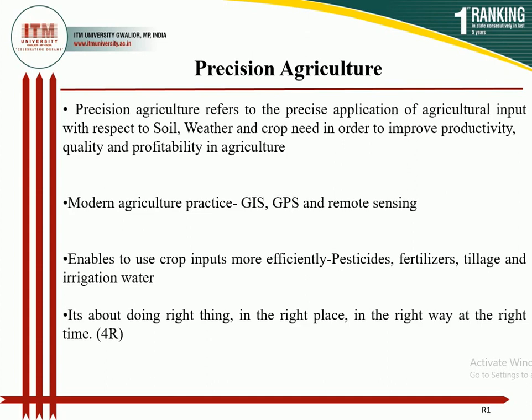Precision farming is an approach where inputs are utilized in precise amounts to get increased average yields compared to traditional cultivation techniques. More than 50% of operational holdings in our country have a size less than 1 hectare. Only a few states in India like Punjab, Rajasthan, Haryana, and Gujarat have 20% of land holdings more than 4 hectares.